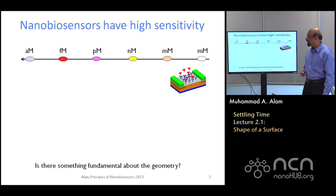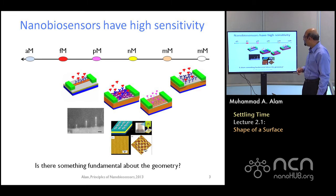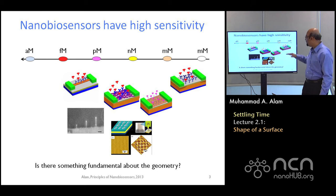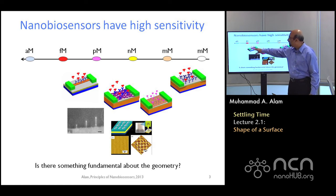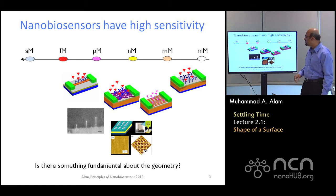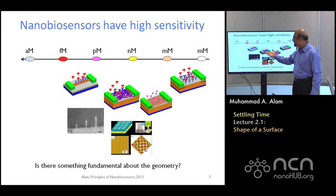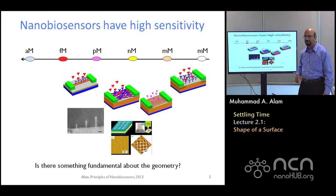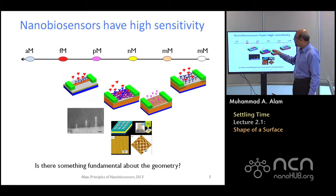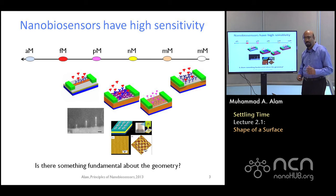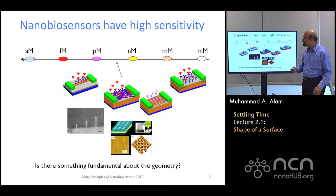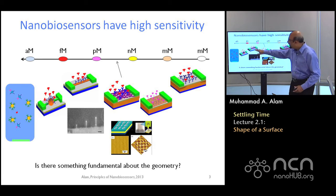You may remember from the last lecture that although there are a wide variety of sensors, once you sort of arrange them according to their shape, planar sensors are far less sensitive compared to nanowire or cylindrical sensors. Other sensors having a complicated shape — for example, a collection of nanowires or a parallel array of nanowires — have a response somewhere in between. We wanted to know what it is in the geometry of this structure that gives rise to the extraordinary sensitivity of nanobiosensors.